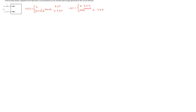The aim of this problem is to find the total power supplied to an ideal basic circuit element at a given time, and also the total energy delivered to the circuit element. The ideal basic circuit element is shown here. The reference current direction is indicated as well as the reference voltage drop across the circuit element. The voltage and current expressions are given: they are 0 for time t less than or equal to 0, and decaying exponentials for time t greater than or equal to 0.